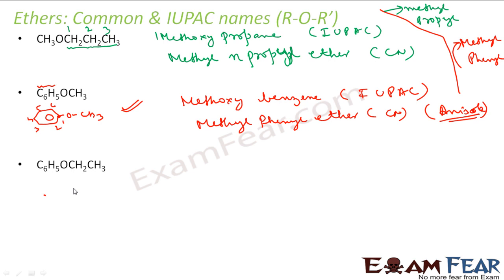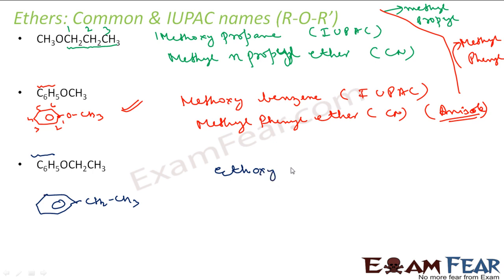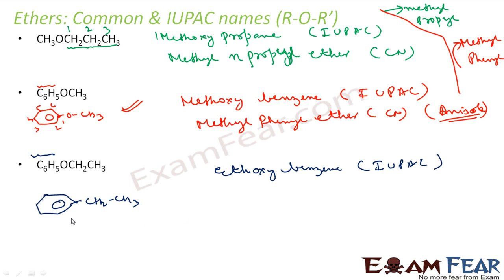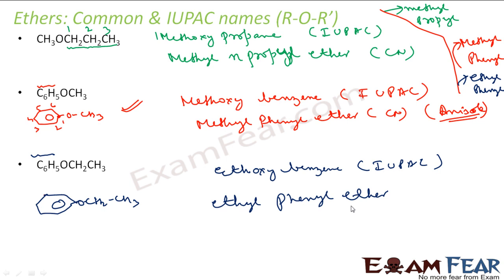Now I have a benzene ring with an ethyl group attached instead of a methyl group. The benzene ring is the primary parent. I have an ethoxy group on benzene, so the IUPAC name is ethoxybenzene. For the common name, I have ethyl and phenyl — E comes before P alphabetically — so it is ethyl phenyl ether. This compound is also called phenetole.